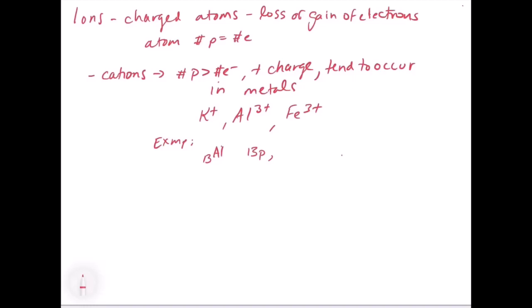For aluminum three plus, so for aluminum zero, that's going to be 13 protons and 13 electrons. For aluminum three plus, that's going to be 13 protons. And to get the charge of plus three, that's only going to have 10 electrons. So that's how we get aluminum three plus, and that's how you can understand it in terms of what we did with the atomic symbols.